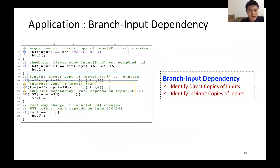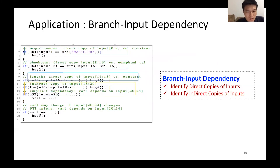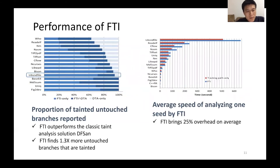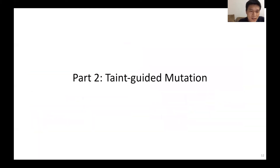With the assistance of FTI, we can implement many applications. Basically, FTI gets the dependence between branches and input bytes. Furthermore, it identifies direct or indirect copies of the input. We use this taint information to construct intelligent mutation. By evaluating taint accuracy, FTI outperforms classic taint analysis solutions significantly, finding 113 more uncovered branches. FTI brings about 25% overhead on average.